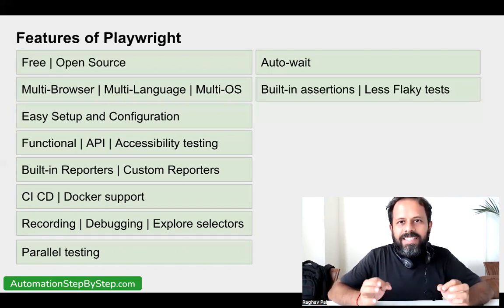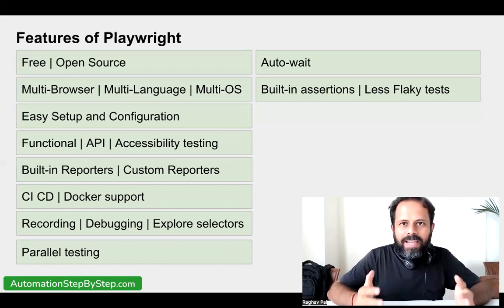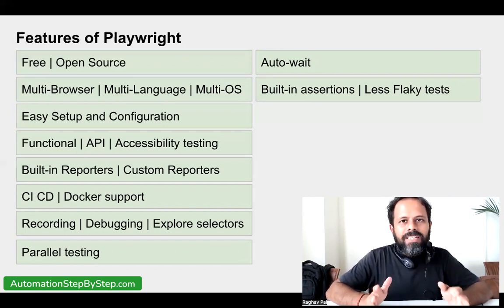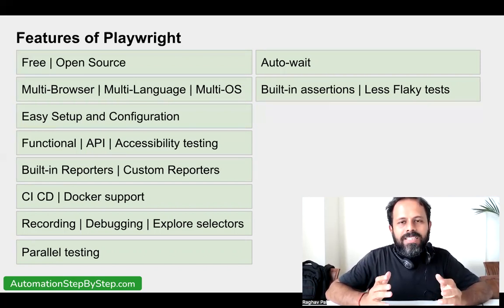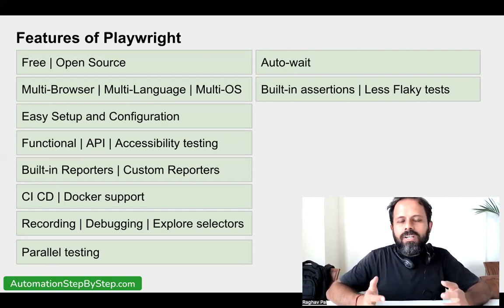We also have built-in assertions. For example, if we want to click on a login button, Playwright will run built-in assertions at the back end — checking if the page is loaded, if the object is loaded, if the object is present and clickable — all this happens automatically. With auto-wait timeouts and built-in assertions, our test cases are very less flaky. Flaky tests are tests that sometimes pass and sometimes fail, and with Playwright there will be very few or no flaky tests.